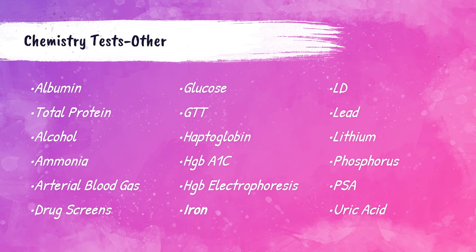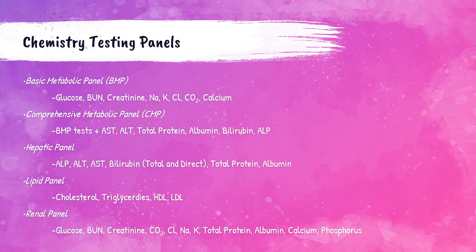Certain groups of tests or panels are commonly used to evaluate general health status or help diagnose a suspected disorder. These are panels of tests ordered together rather than individually. Commonly run panels in the clinical chemistry laboratory are the basic metabolic panel (BMP), comprehensive metabolic panel (CMP), hepatic panel, lipid panel, and renal panel.